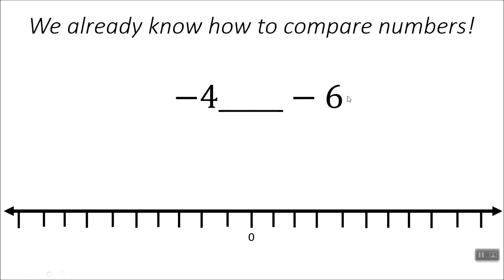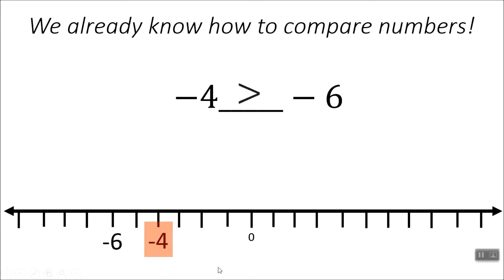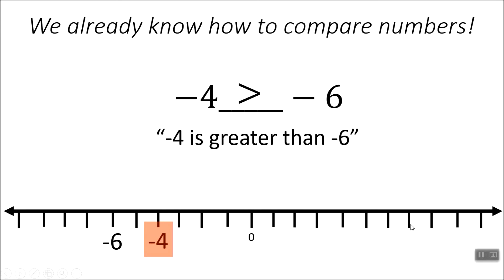So now we have two negative numbers — this can get confusing. A lot of kids will say, oh, negative 6 is bigger. Well, you've got to be real careful. I'm going to put my numbers on the number line, and we're going to see that negative 4 is the number on the right, so that's really the larger number. It's going to eat the negative 4. I would read this as negative 4 is greater than negative 6.